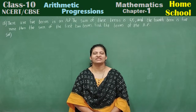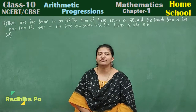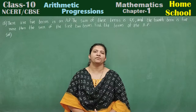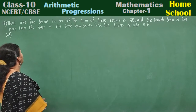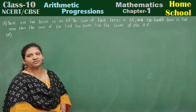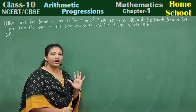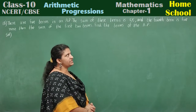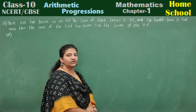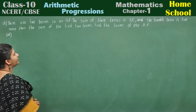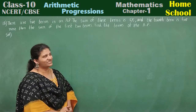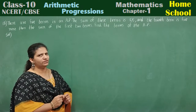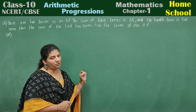Hi, hello, welcome to Home School. This is your Class 10 Mathematics, first chapter: Arithmetic Progressions. This is an application question — a very good question from your previous question papers. There are five terms in an arithmetic progression. The sum of these terms is 55, and the fourth term is five more than the sum of the first two terms. Find the terms of the AP. This question can be a little confusing, so we are going to read the problem step by step.